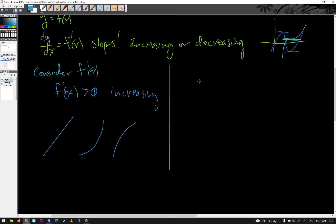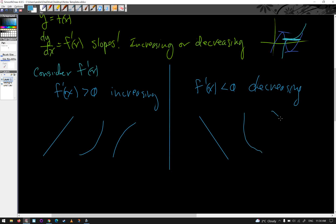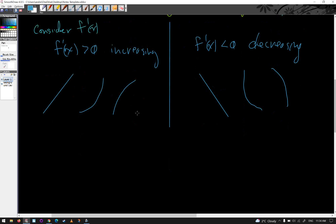Contrasting that: if f'(x) is less than zero, the function is decreasing. It can decrease linearly, or it can decrease in a curved fashion in different ways. So f'(x) tells us: if it's positive, we get something of this shape; if it's negative, it's going to look something of this other shape.